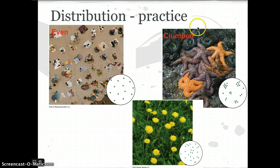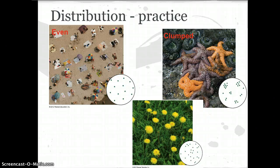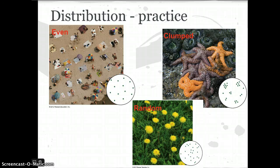This next image is clumped. Organisms in a tide pool often clump based on water height or where food is accessible. And weedy species show random distribution because they're so successful at surviving wherever they land.